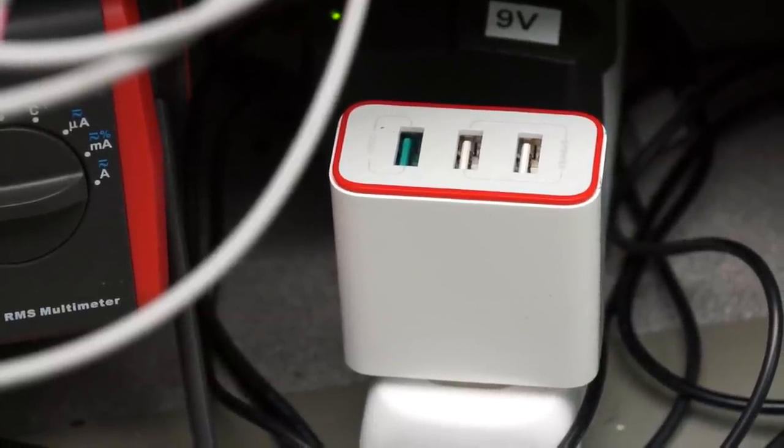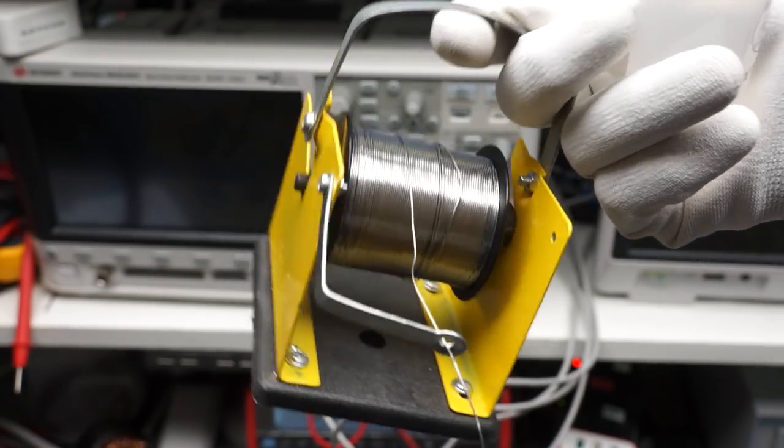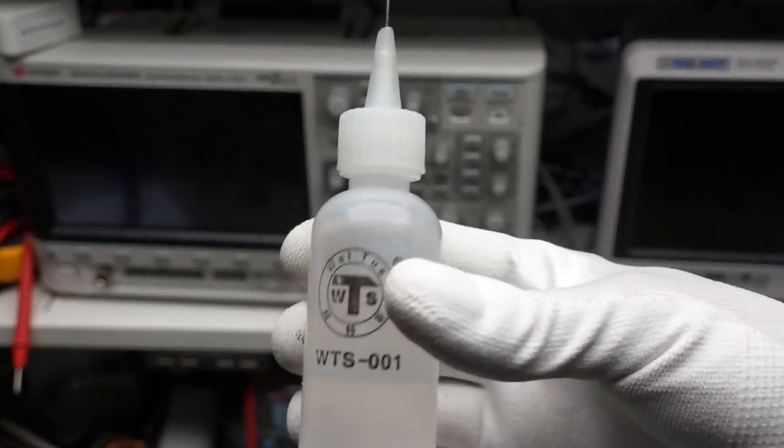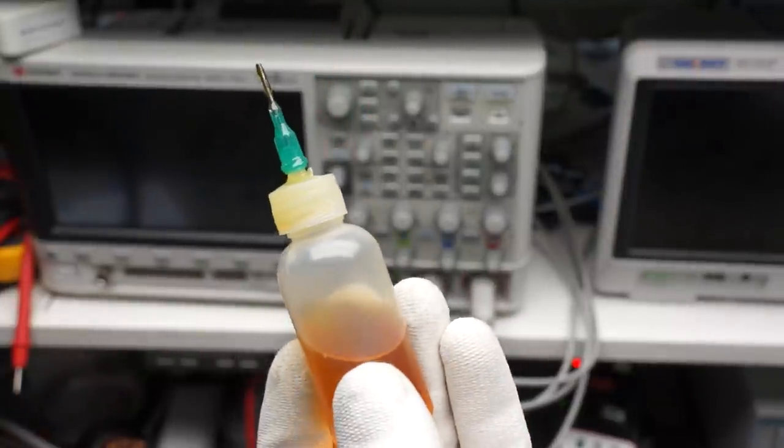We will cover hot air later. With a soldering iron come three essential things: solder, flux and alcohol. Flux is much more important than many of you think. With flux, all beginners improve their soldering capabilities by factors.